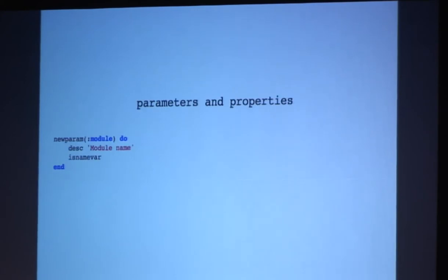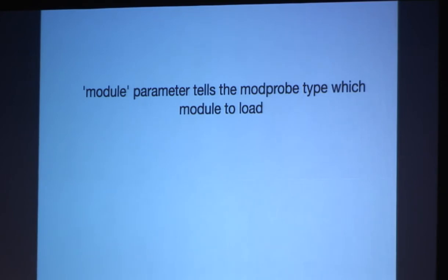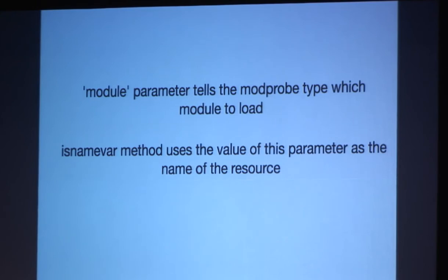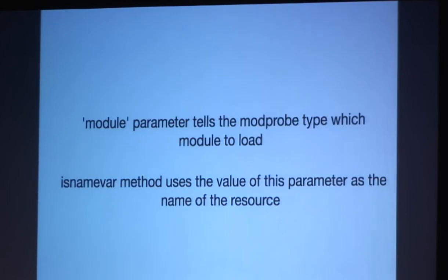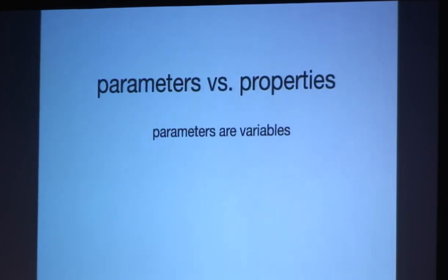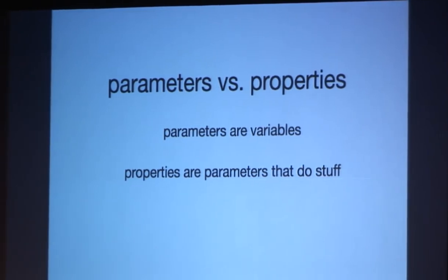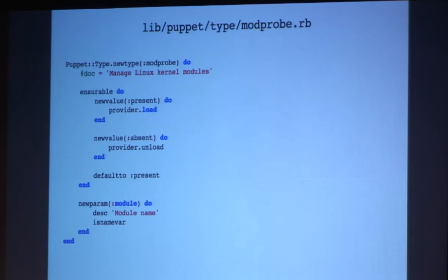So parameters and properties, we only have a single parameter module, which is the module name, and isNameVar. So the module parameter tells the modprobe type which module to load. IsNameVar method uses the value of this parameter as the name of the resource, which isn't that big of a deal. It should be pretty obvious. Parameters versus properties, though. Parameters are kind of like variables for the most part. Properties are also parameters, but they also do stuff. I like to think of them sort of as the modifiable bits. In the case of a user, it would be password and stuff that you can actually check against and change. So our actual type looks like this. So we have the new type method, which takes the type name, and the do block. The doc string, we have our insurable methods, which is the load method from the provider and the unload method from the provider. And it defaults to present, so whenever you define your resources, it'll automatically try to make sure it's present. And the single param for module.